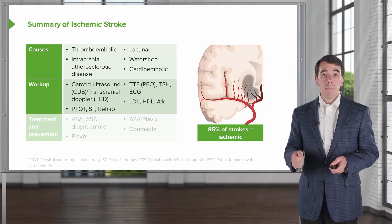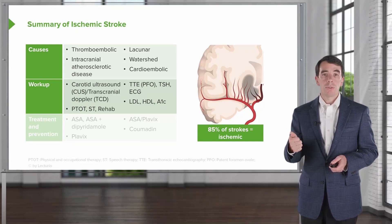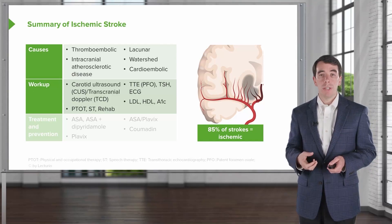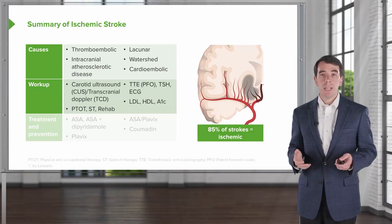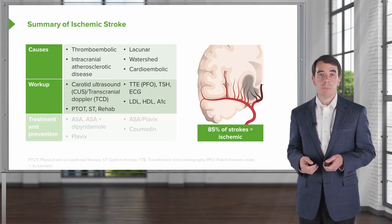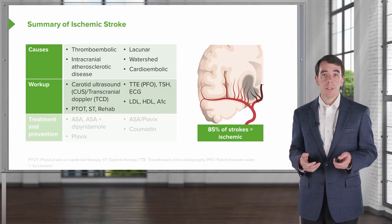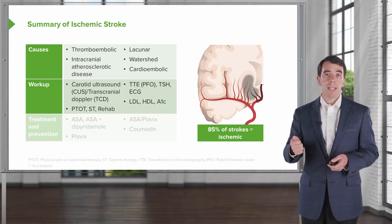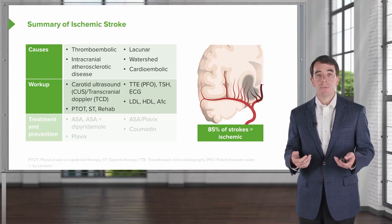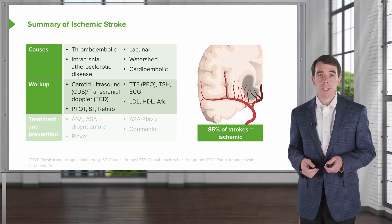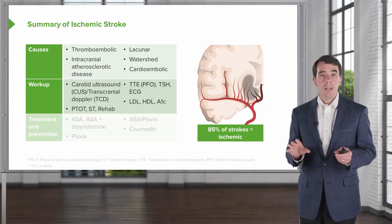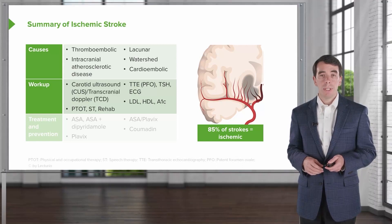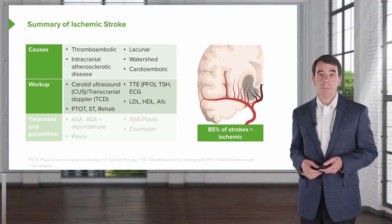When we think about the diagnostic workup, we're working up each of those major causes. We'll do carotid ultrasounds to look at the blood vessels going to the brain, or transcranial Doppler to look at the blood vessels within the brain. Transthoracic echocardiography is done to evaluate the heart and look for a patent foramen ovale, as well as blood testing like a thyroid study and EKGs to look for paroxysmal atrial fibrillation. We also evaluate cholesterol, LDL and HDL, as well as hemoglobin A1C as stroke risk factors. Rehab — including physical, occupational, and speech therapy — is critically important for recovery.